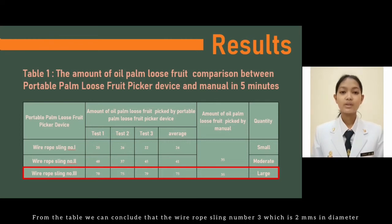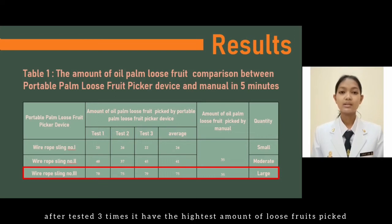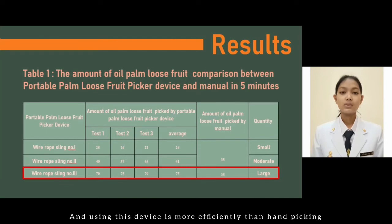From the table, we can conclude that wire rope sling number 3, which is 2 mm in diameter, after testing 3 times, has the highest amount of loose fruit picked. Using this device is more efficient than hand-picking.